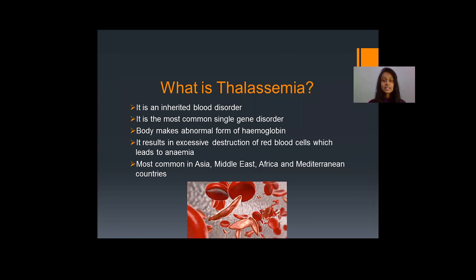First, let's look at what thalassemia is. It's an inherited blood disorder, which means it is passed from the parents to children through genes. It is the most common single gene disorder. In thalassemia, the body makes an abnormal form of hemoglobin — the molecule which transfers oxygen throughout the body. Due to this abnormal hemoglobin, it results in excessive destruction of red blood cells, which leads to anemia.